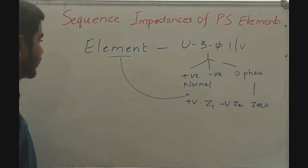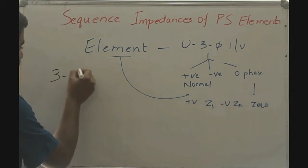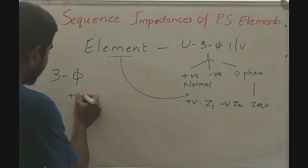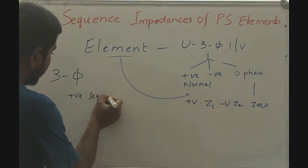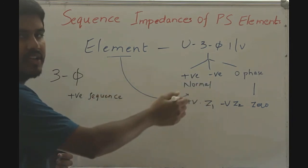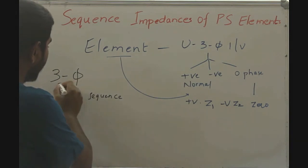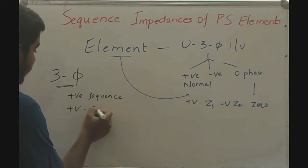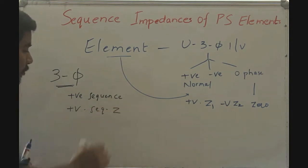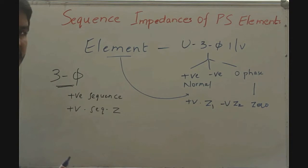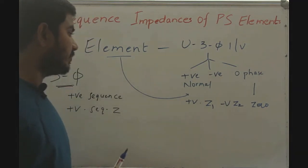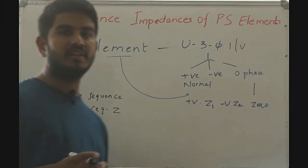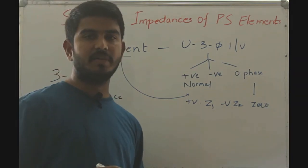In the balanced three-phase system, we have only the positive sequence current and do not have the zero sequence or negative sequence components. Therefore, in the balanced three-phase system, we have only the positive sequence impedance. Whereas in the unbalanced three-phase system, we have three impedances: the positive sequence impedance, the negative sequence impedance, and the zero sequence impedance.